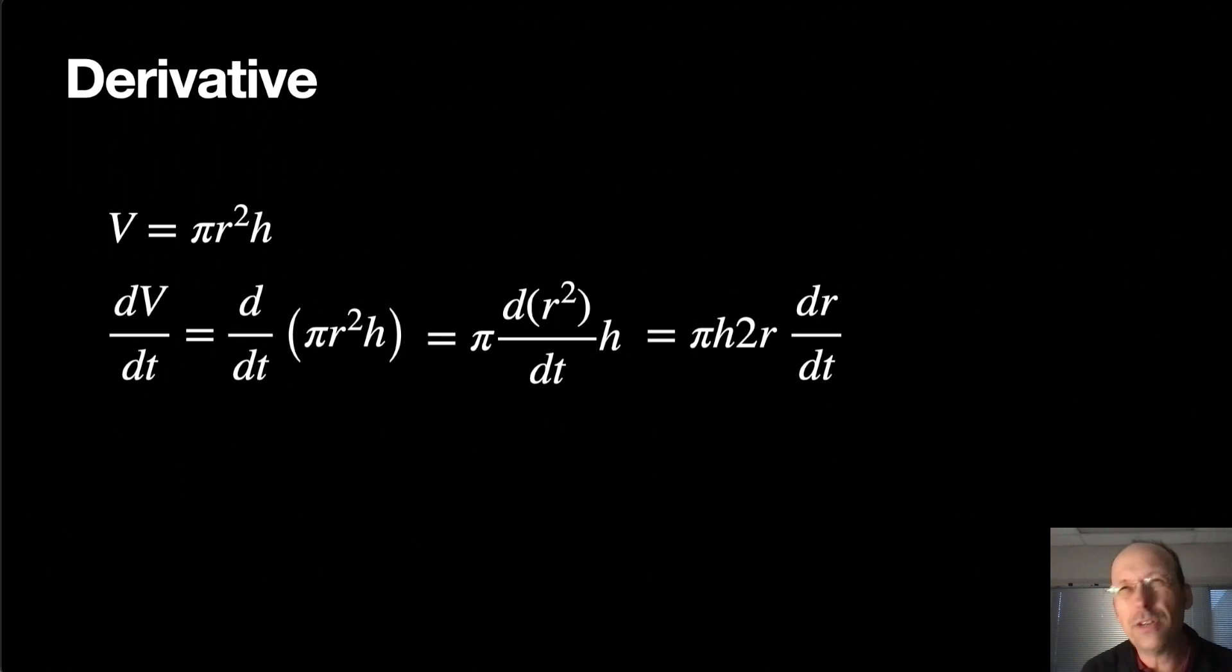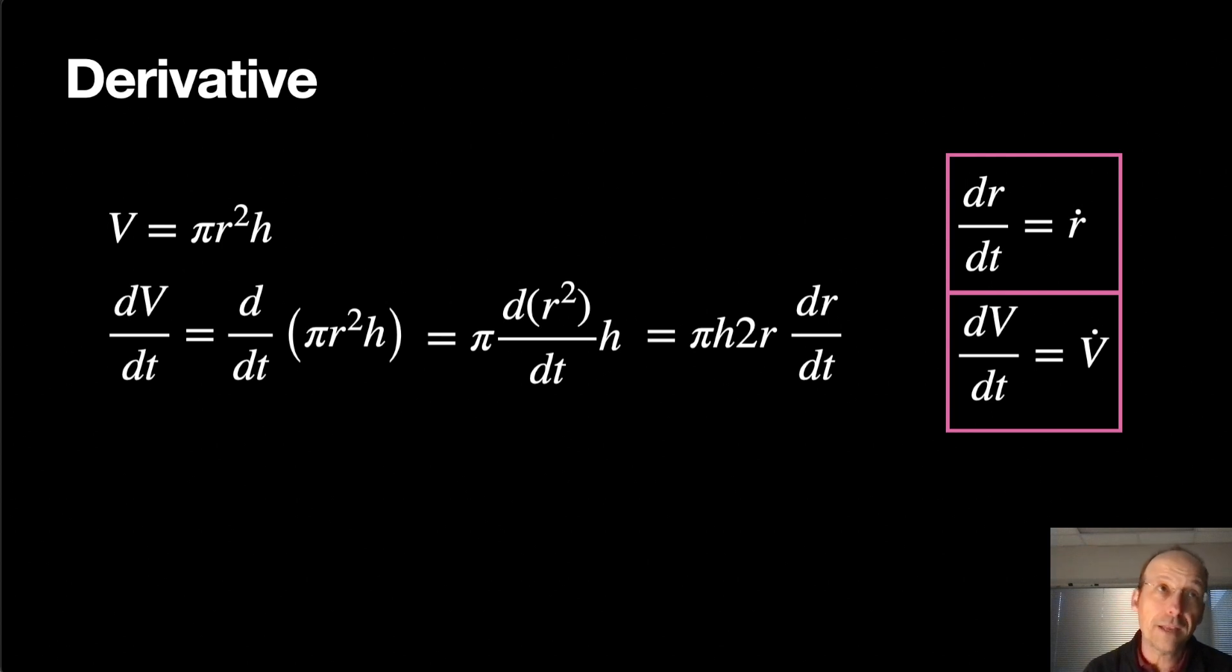Now, just as notation, because this is the way we do it in physics. When we take derivative with respect to time, we like to use special notation. So I'm going to use this dot notation. You don't have to do this. It just makes it easier for me to write. So I'm going to say the derivative of r with respect to t is r dot. So we put a dot over it. And it looks really cool and it makes us feel like we're special. So we're going to do that. And then that would mean also the derivative with respect to time of the volume is V dot.